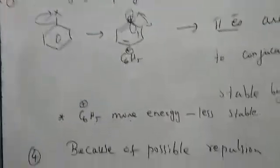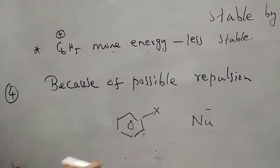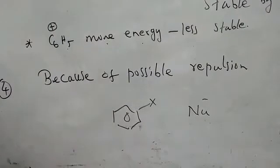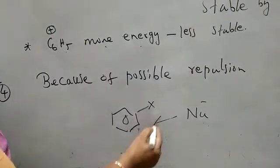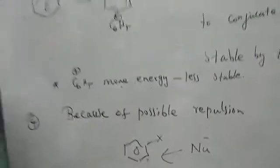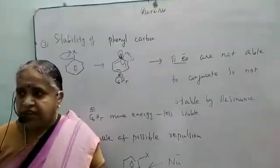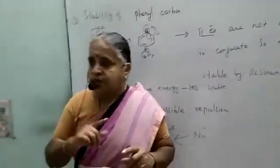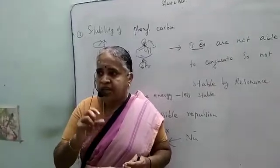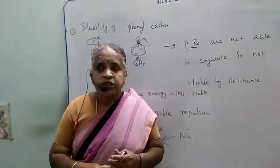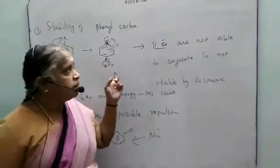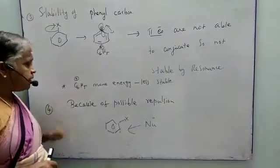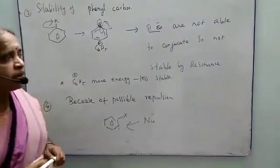The last point is possible repulsion. Chlorobenzene has an electron-rich ring, and the nucleophile is also electron-rich. Like charges repel each other, so it is not possible for the nucleophile to come closer. Because of these four reasons — resonance effect making the bond short and strong, SP2 hybridization making the bond short and difficult to break, the phenyl carbocation not stabilized by resonance due to orbital geometry, and possible repulsion — we can conclude.